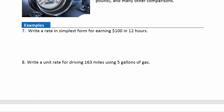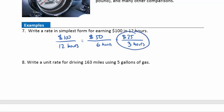Write a rate in simplest form for earning $100 in 12 hours. So now I want to make sure that I include the units here. So $100 over 12 hours, I want to simplify that thing down. So first I start by cutting it in half, dividing a 2 out of each of those. So that would be $50 over 6 hours. I can simplify that again, cut it in half one more time. $25 over 3. And I think that's the best I can do. So there is my final simplified form there, $25 for 3 hours.